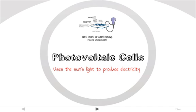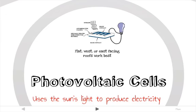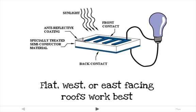Photovoltaic cells are basically panels that convert sunlight directly into electricity — solar electricity. They do not use the sun's heat, but use the sunlight. Heat can actually affect the efficiency of a solar panel. They were developed initially in the 1950s by the space program, and small versions can be found on calculators and watches. They're used for traffic signals, and buildings with good access to the sun and flat roofs, or a roof that faces east or west, are good candidates for photovoltaic systems.